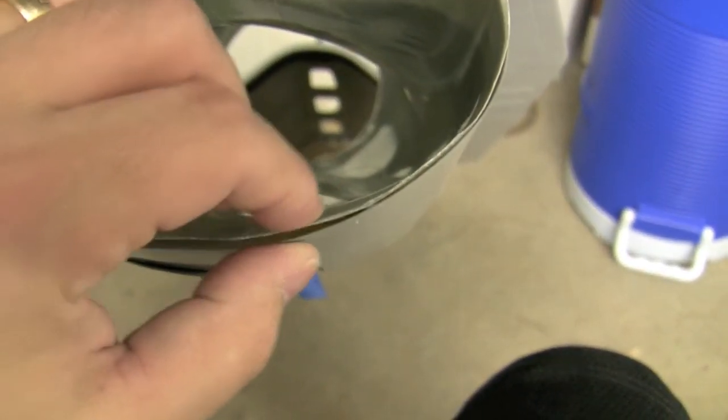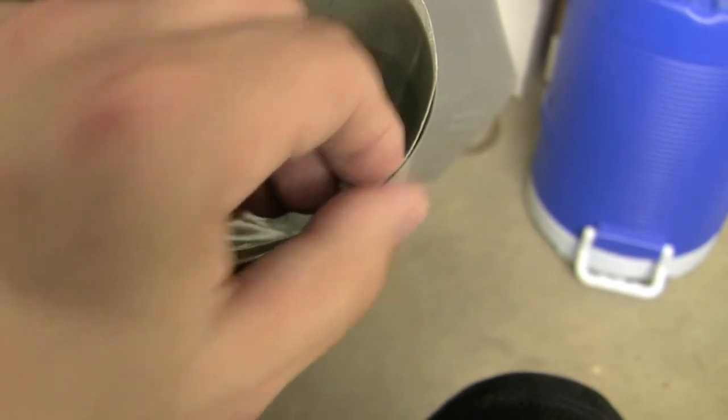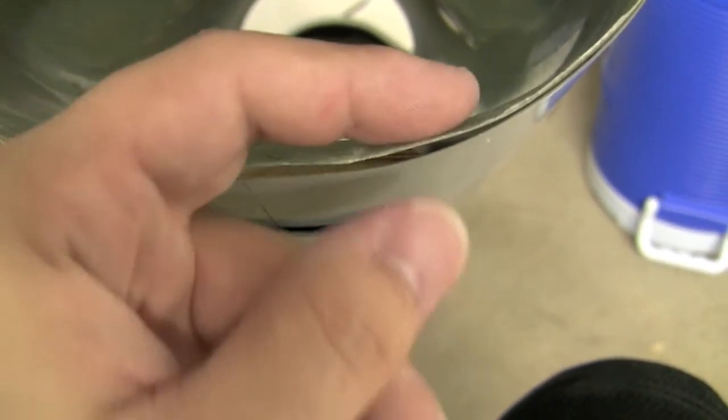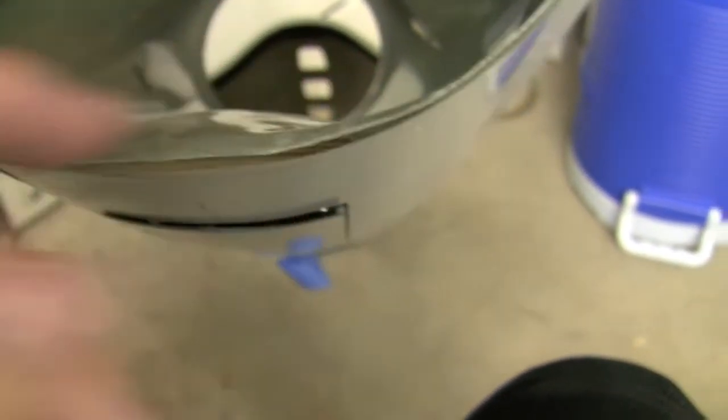Just need to tape these edges down before we pour in our resin. Same thing on the bottom here. Just tape that down and then we'll pour resin in there and then with our final shaping we can kind of sand it to the correct shape.